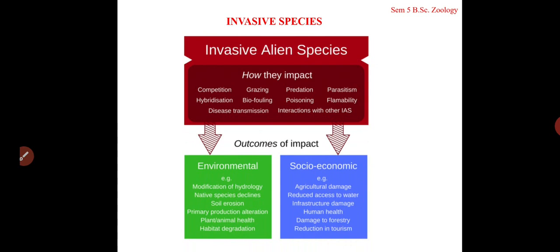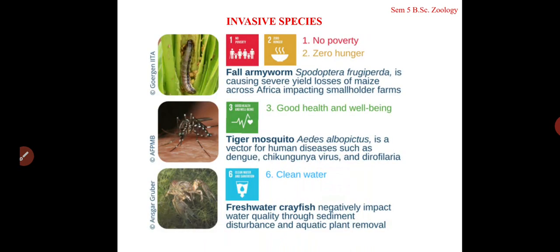Certain invasive species like the papaya mealybug were introduced and are now spreading throughout India, reducing the yield of papaya. Other impacts include reduced access to water, infrastructure damage, human health effects, damage to forestry, and reduction in tourism — all outcomes of the impact of invasive alien species.